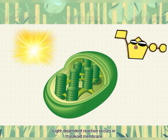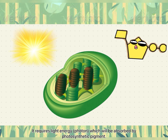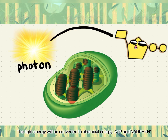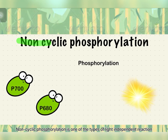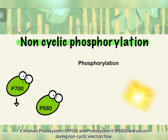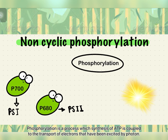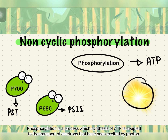The light-dependent reaction occurs in the thylakoid membrane. It requires light energy — photons — which will be absorbed by photosynthetic pigments. The light energy will be converted to chemical energy: ATP and NADPH+H⁺. Non-cyclic phosphorylation is one of the types of light-dependent reactions. It involves photosystem 1 (P700) and photosystem 2 (P680), and involves non-cyclic electron flow. Phosphorylation is the process by which synthesis of ATP is coupled to the transfer of electrons excited by photons.